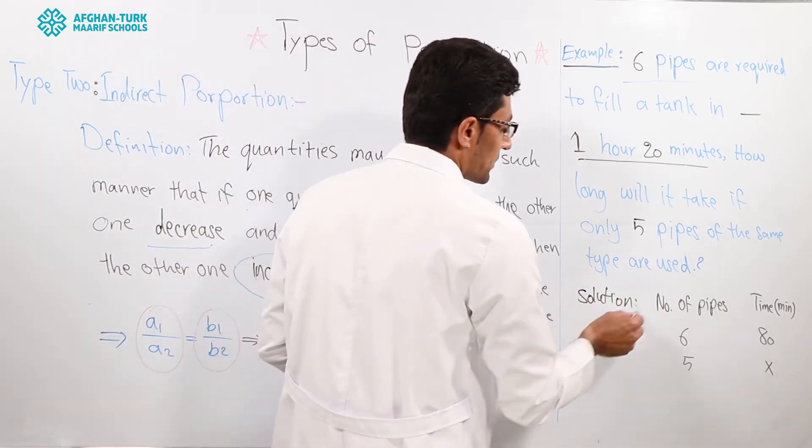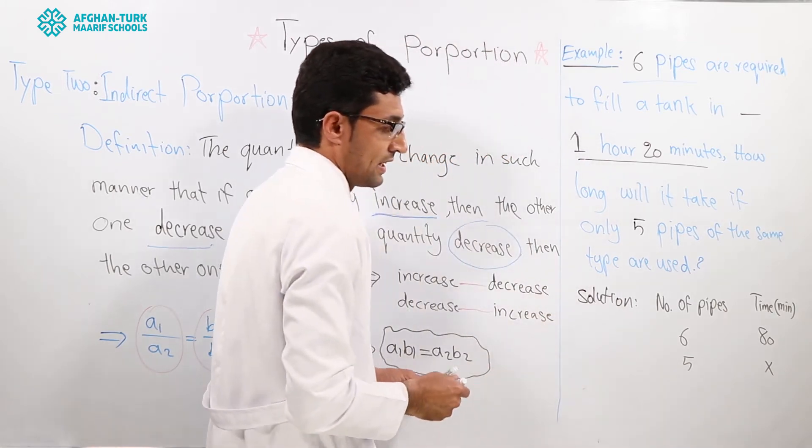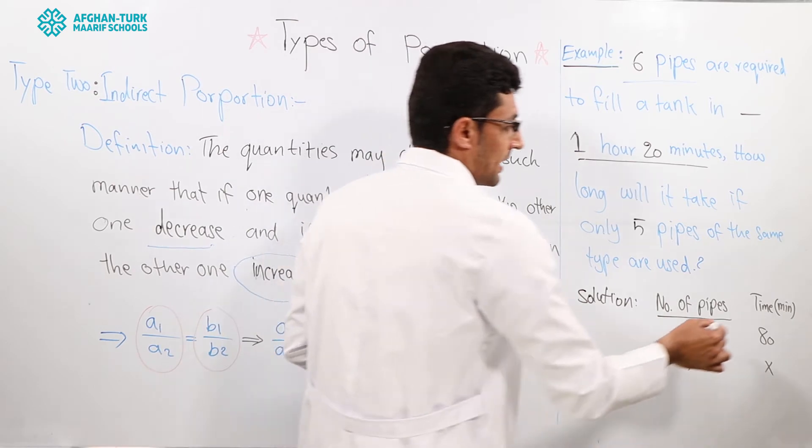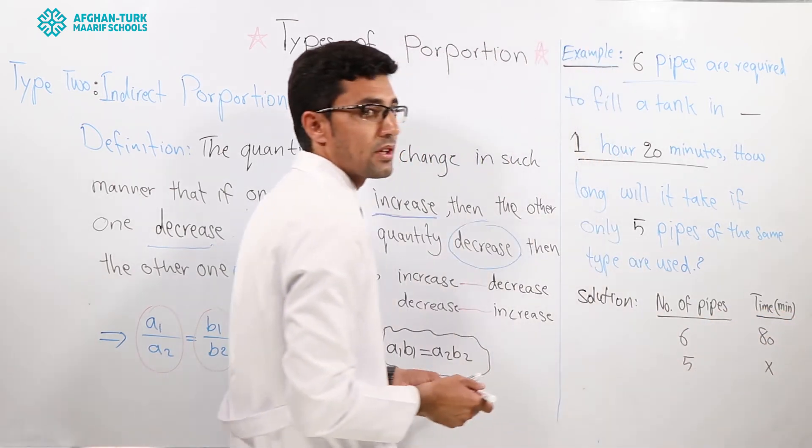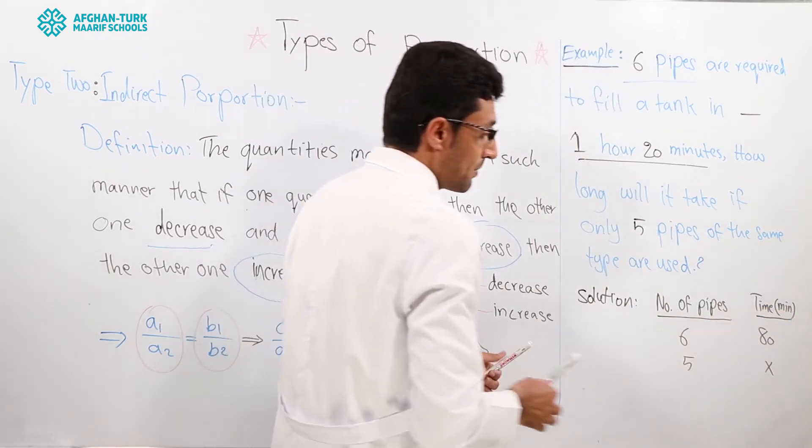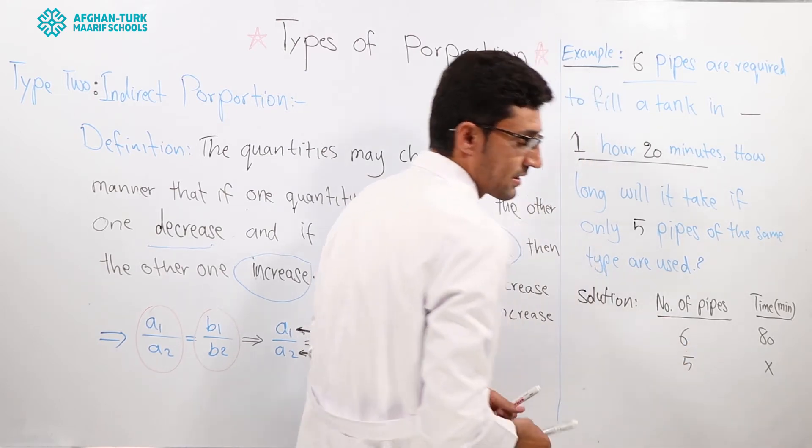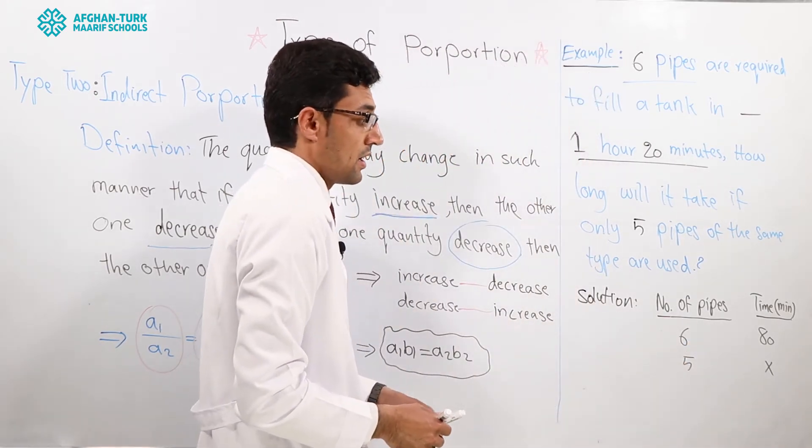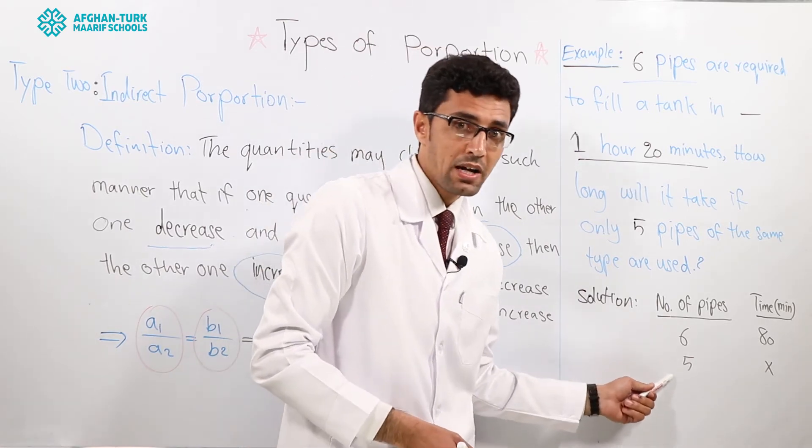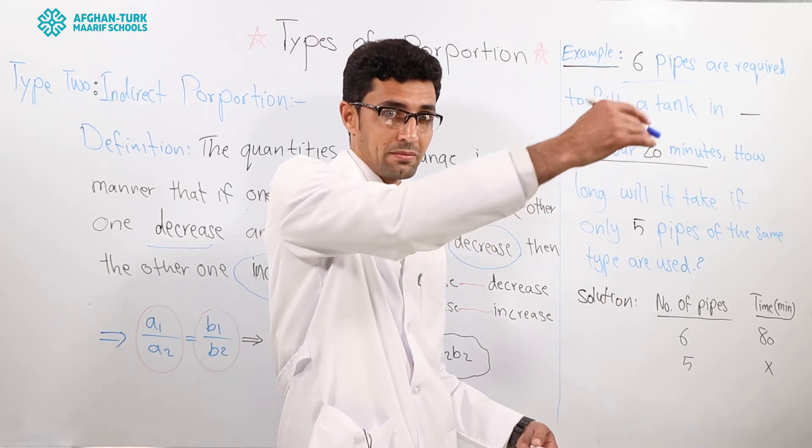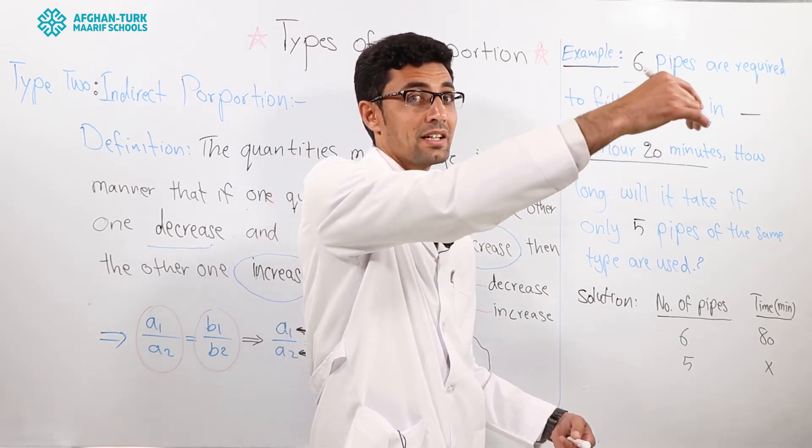In order to find the solution, at first I write number of pipes and second I wrote time. Number of pipes are six. How much time does it take? 80 minutes. But if number of pipes decrease, what happened to the time? The time will increase.